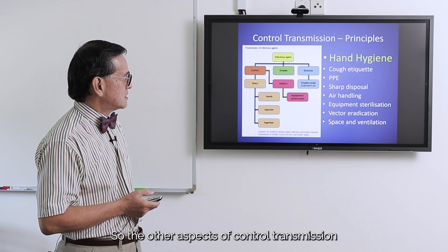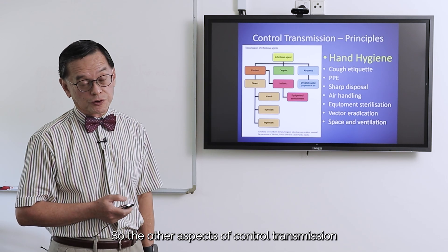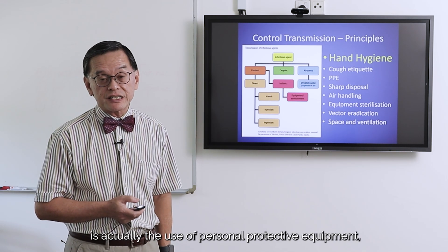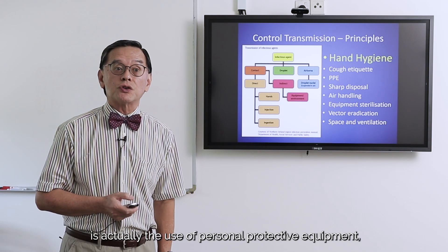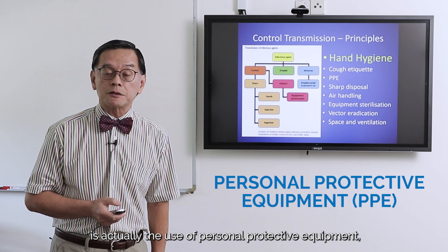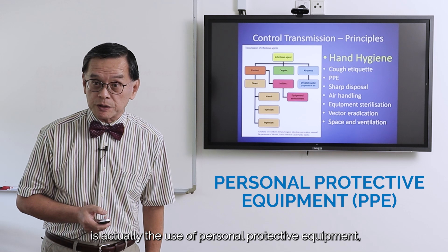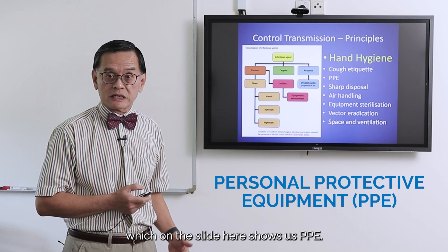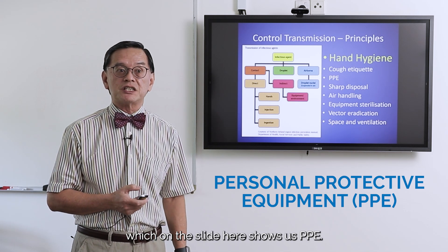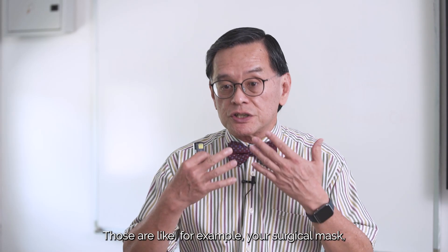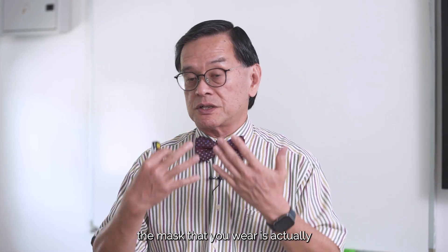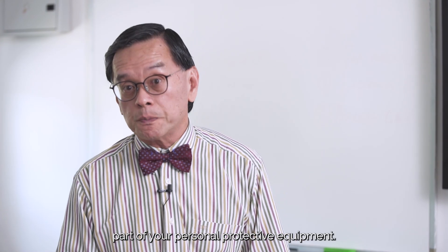The other aspect of transmission control is the use of personal protective equipment, which on the slide here is shown as PPE. Those are, for example, your surgical mask — the mask that you wear is actually part of your personal protective equipment.